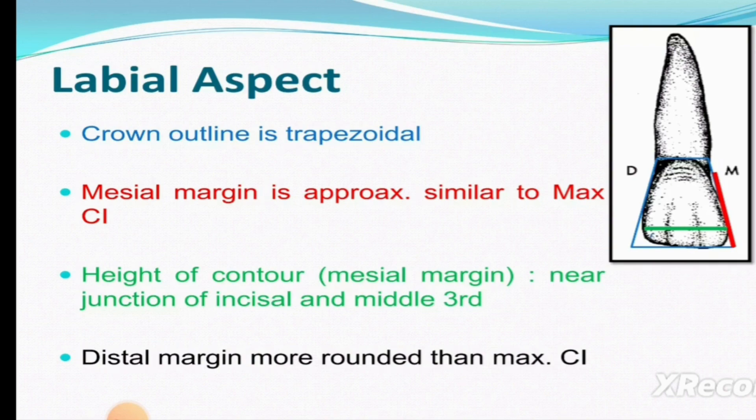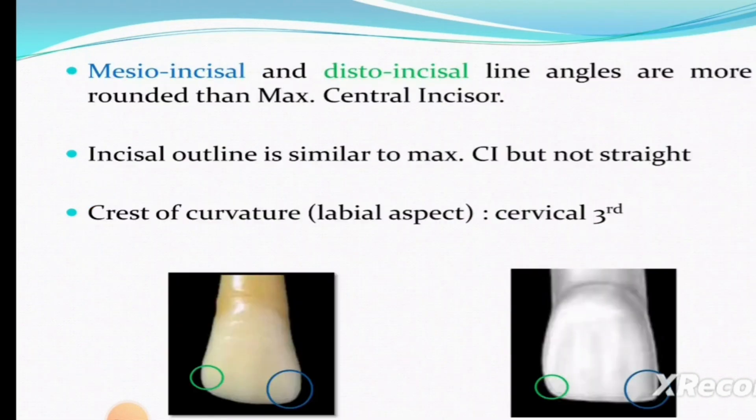The mesial marginal ridge is approximately the same. The contact area is mainly near the junction of the incisal and middle one-third. The distal margin is more rounded than the maxillary central incisor. The mesio-incisal and disto-incisal line angles are also more rounded than the maxillary central incisor.